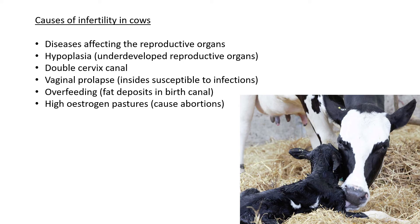Secondly, hypoplasia — which also happens with bulls. 'Hypo' means under, so this refers to underdevelopment specifically of the reproductive organs. In this case maybe the uterus is too small or the endometrium lining has never developed properly, meaning the fertilized egg cannot develop. Hypo means under and '-plasia' in this context means development — so hypoplasia means underdevelopment.